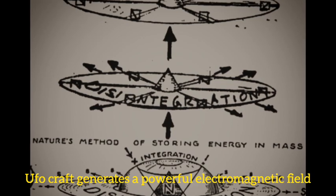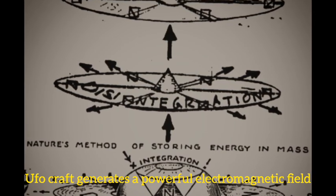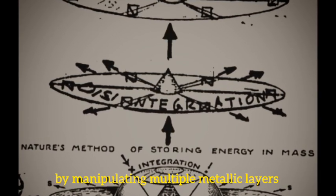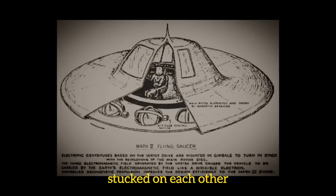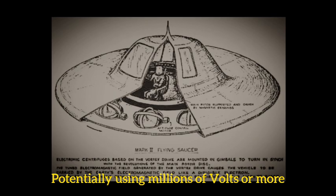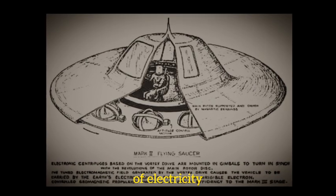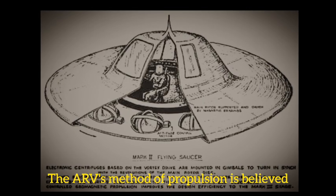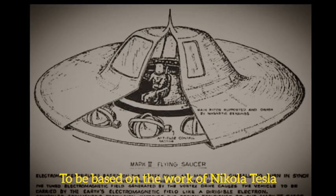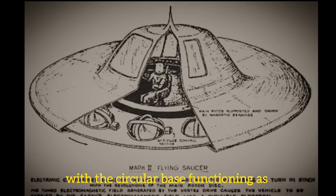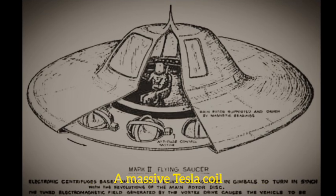A UFO craft generates a powerful electromagnetic field by manipulating multiple metallic layers stacked on each other, potentially using millions of volts or more of electricity. The ARV's method of propulsion is believed to be based on the work of Nikola Tesla, with the circular base functioning as a massive Tesla coil.